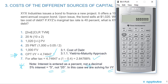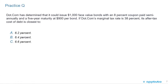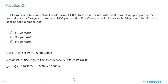If we're given the market rate, we can calculate the price of the bond as the present value. Now let's do a practice question. .com has determined it could issue $1,000 face value bonds with an 8% coupon paid semi-annually and a five-year maturity at $900 per bond — sold at a discount. If .com's marginal tax rate is 38%, its after-tax cost of debt is closest to: A) 6.2%, B) 6.4%, or C) 6.6%.